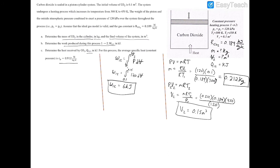Lastly, we solve for heat transfer Q12 using the first law of thermodynamics. The change in internal energy equals Q12 minus W12, so Q12 equals the change in internal energy plus the net work. Because this is an isobaric process, the change in internal energy is mass times specific heat times the temperature difference. Adding the work W12 gives the heat transfer Q12.